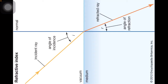The incident ray travels and enters the second medium — that's why we say it's refracted. The angle of incidence is i and the angle of refraction is r.